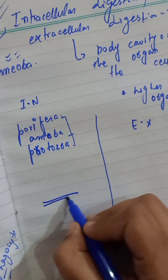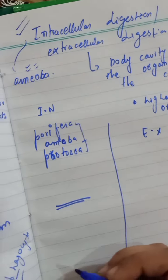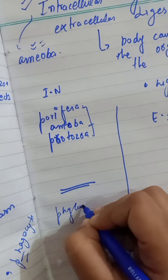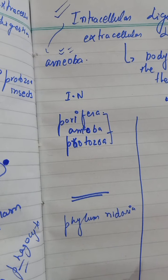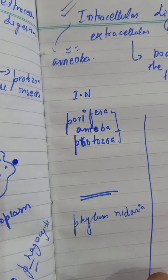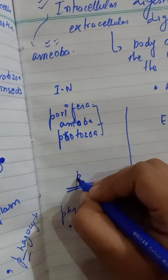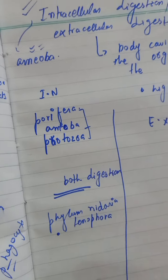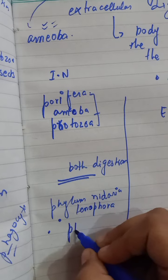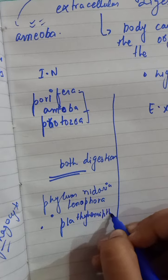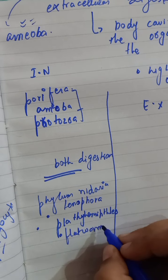Now let's talk about organisms where both digestion occurs. That would be the phylum Cnidaria — for example, hydra and ctenophora. These are phyla where both digestion occurs. The phylum Platyhelminthes is also a phylum where both digestion occurs — take the example of flatworms and planaria. These are all examples of organisms in which both intracellular and extracellular digestion occur.